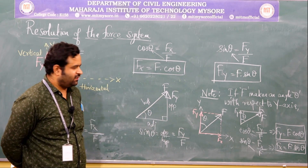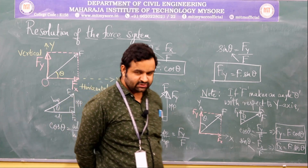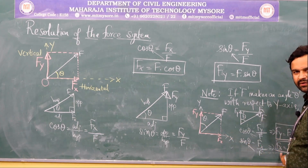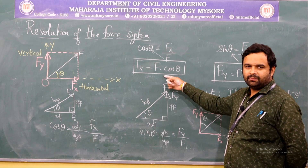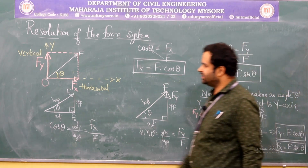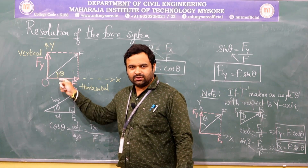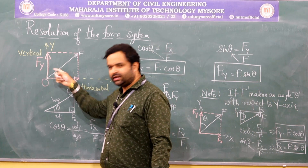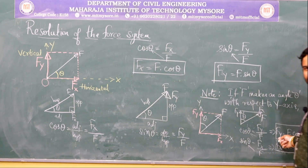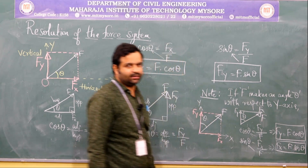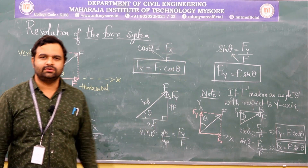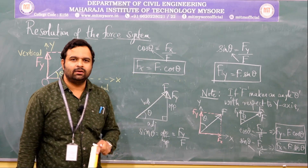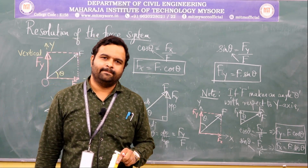Please observe the values of Fx and Fy here. Since the angle is with respect to the vertical axis, the Fx and Fy components are interchanged compared to the previous case. When theta is the angle made with respect to horizontal: Fx = F cos theta, Fy = F sin theta. But if theta is with respect to the vertical axis: Fy = F cos theta and Fx = F sin theta.